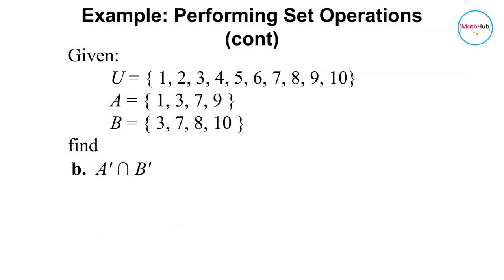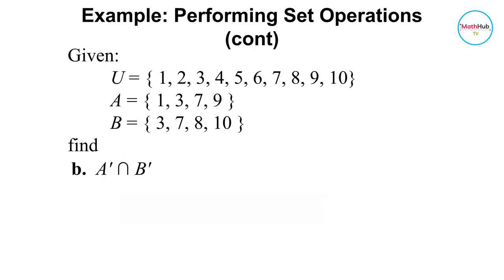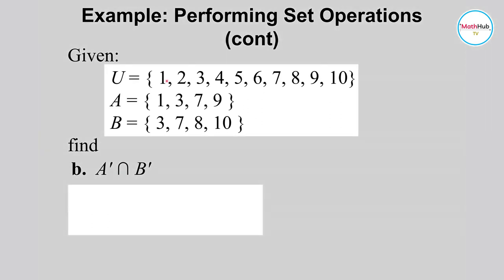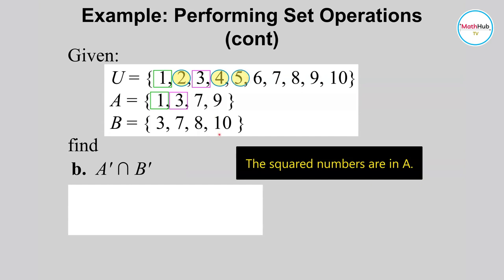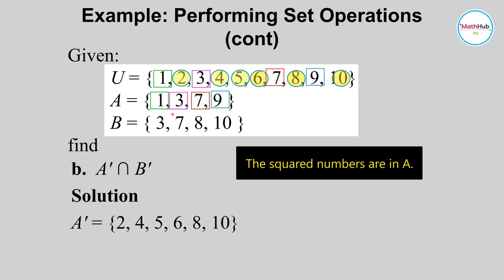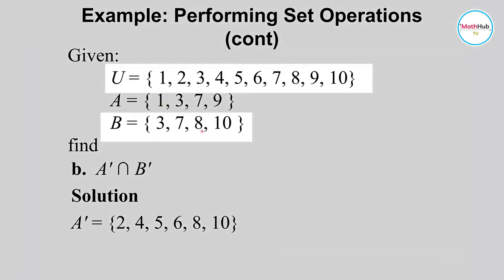Using the same given information, we now want to find A complement intersection B complement. First, we find A complement — the set of all elements in the universal set that are not in A — which is 2, 4, 5, 6, 8, and 10. Next, we find B prime, the complement of B, meaning elements in the universal set that are outside of B.